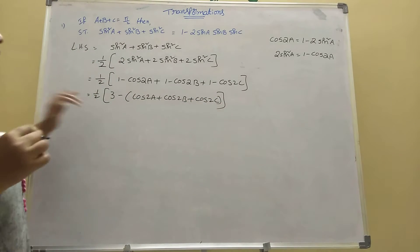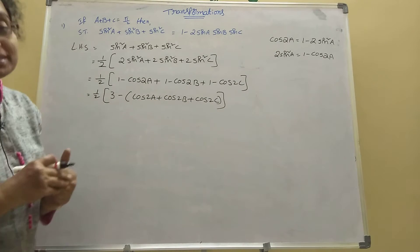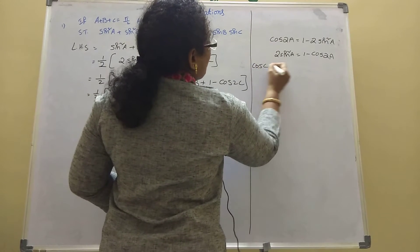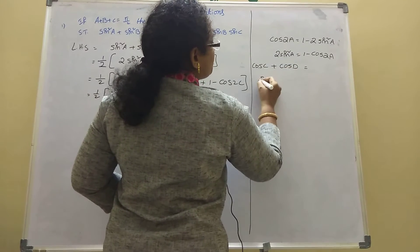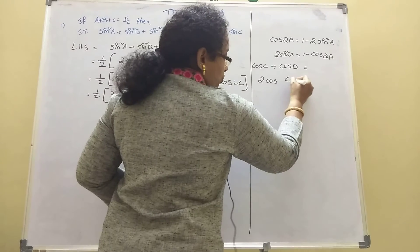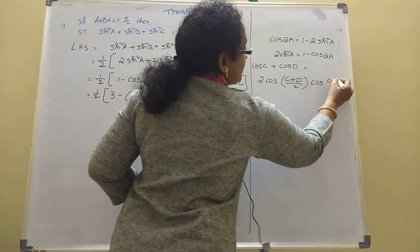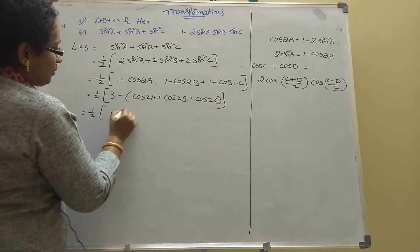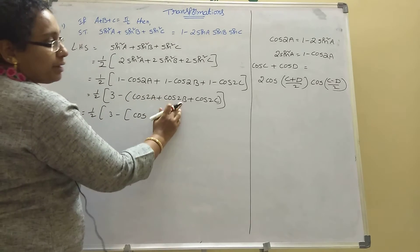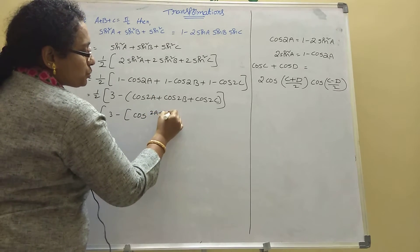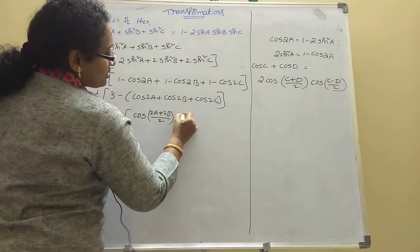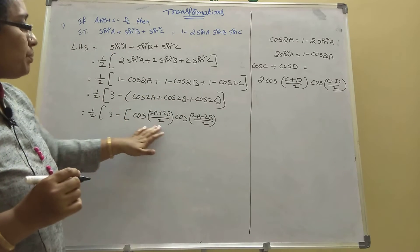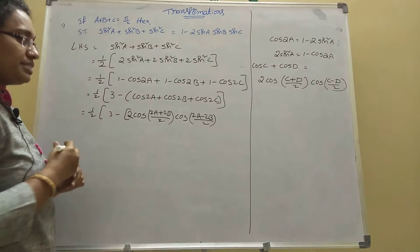Now apply the formula for cos C plus cos D, which is 2 cos((C+D)/2) into cos((C-D)/2). Here C is 2A and D is 2B. So cos 2A plus cos 2B becomes 2 cos((2A+2B)/2) into cos((2A-2B)/2), which is 2 cos(A+B) into cos(A-B). Plus cos 2C as it is.